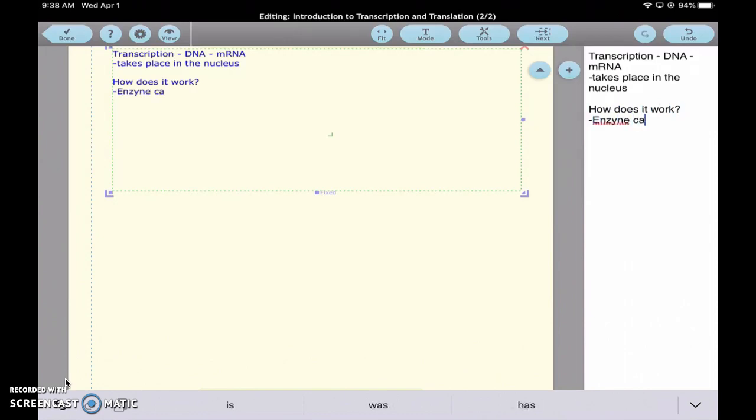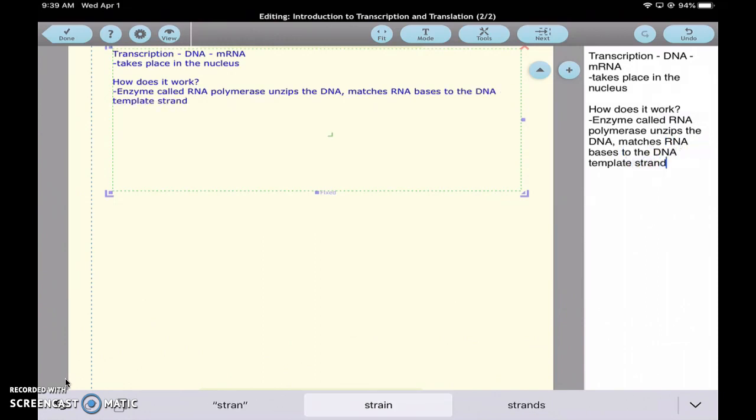The enzyme, called RNA polymerase, unzips the DNA, so it breaks the hydrogen bonds, and matches bases, RNA bases, to the DNA template strands.